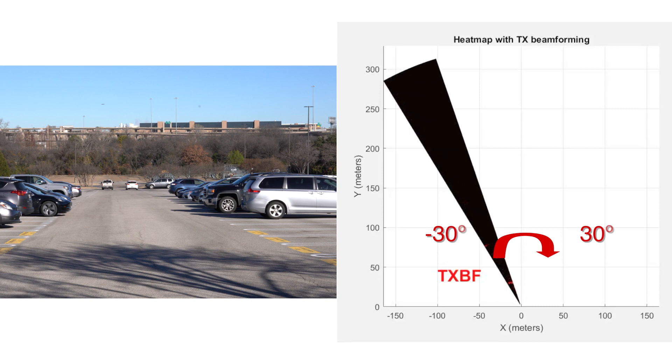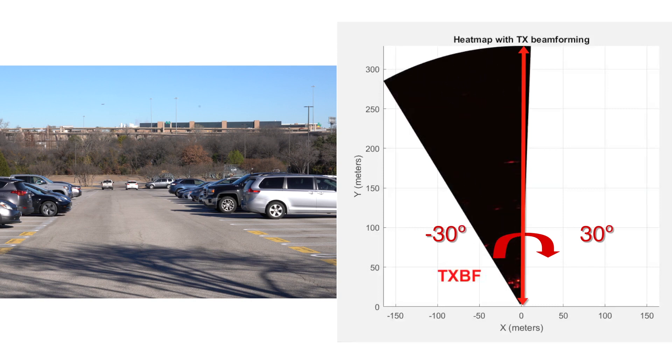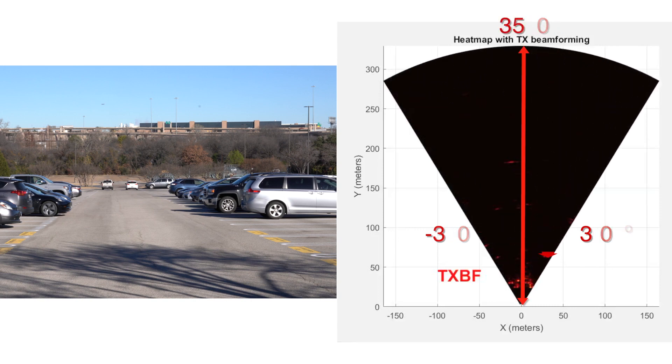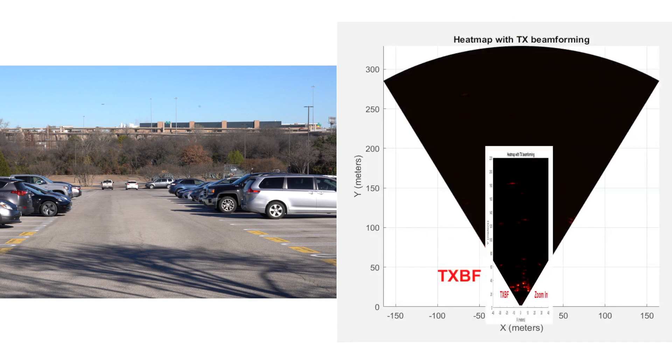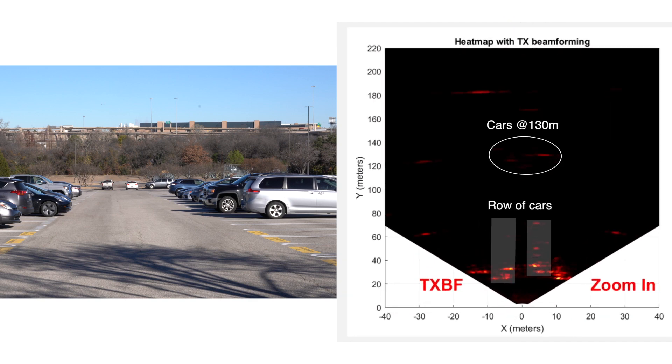The TX beamforming mode supports car detection range of 350 meters with dynamic beam steering to track the desired field of view. This extended range mode can be applied when driving on highway.